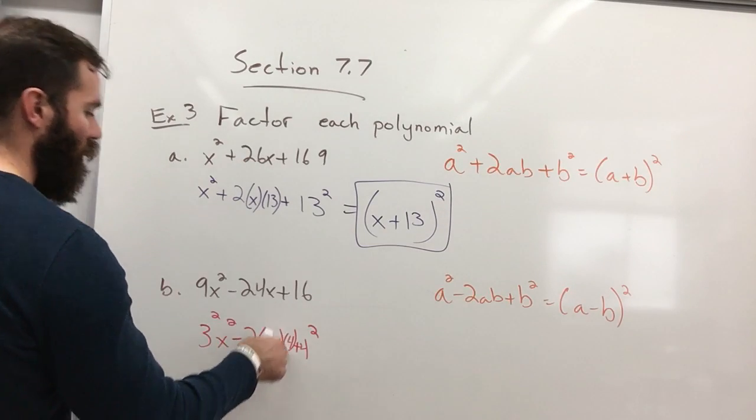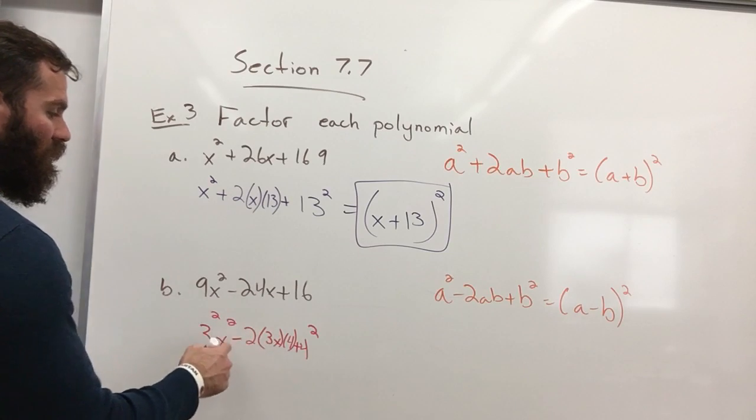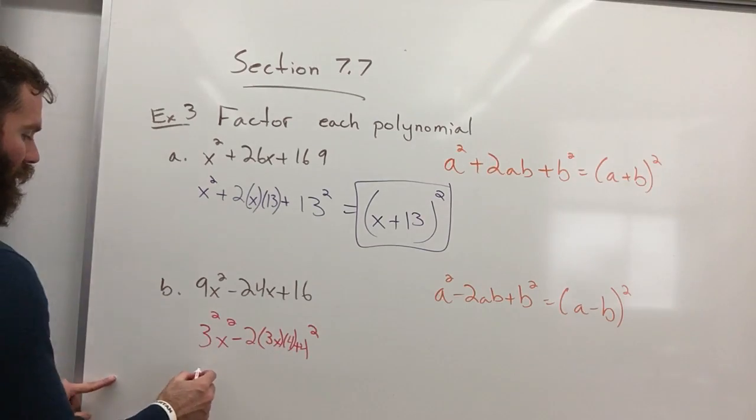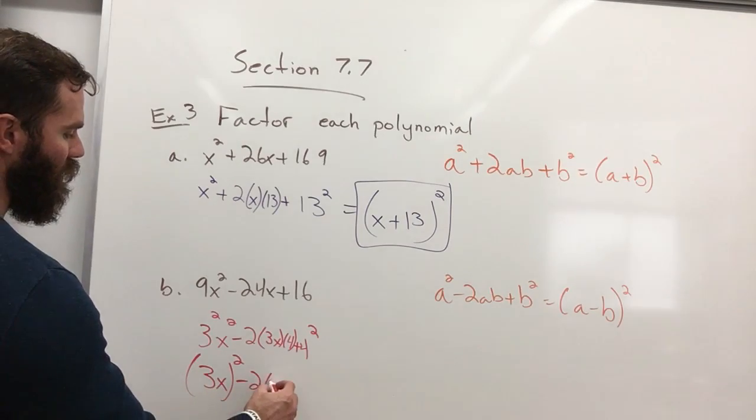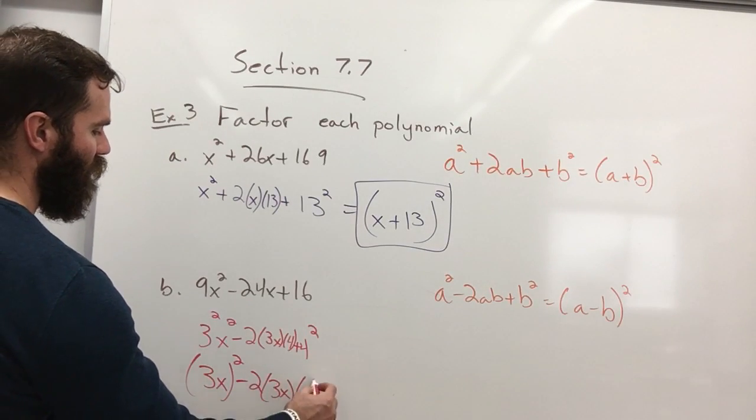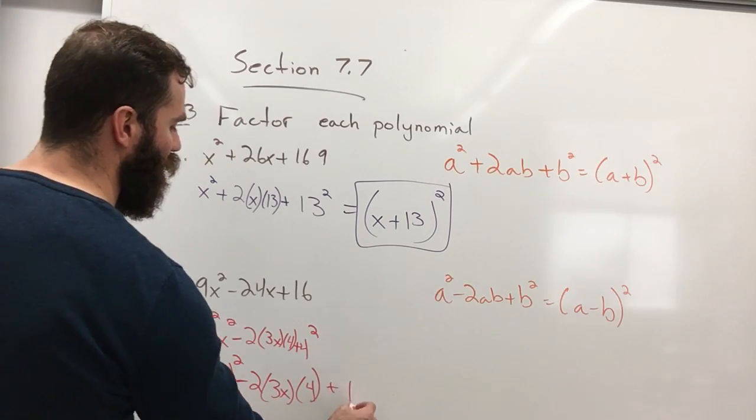Negative 6x times 4 is negative 24. So this is correct. I can rewrite this to make it look a little bit better. So 3x squared minus 2 times 3x times 4 plus 4 squared.